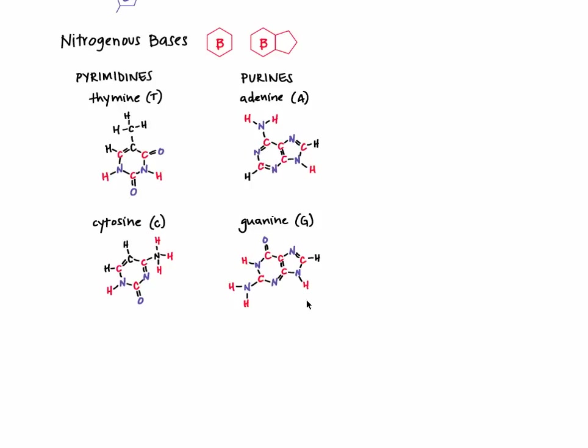These bases are divided into two categories, the pyrimidines and the purines. Pyrimidines are made of one chemical ring, or atoms that are covalently bonded into the shape of a ring. Thymine and cytosine are pyrimidines. Purines are made of two chemical rings, and adenine and guanine are purines. All of the nitrogenous bases have some polar covalent bonds, forming some partially negative and some partially positive atoms. Here, I've drawn the partially negative atoms in blue and the partially positive atoms in red. Remember that these partial charges are formed because of electronegativity differences between the atoms forming the polar covalent bond.